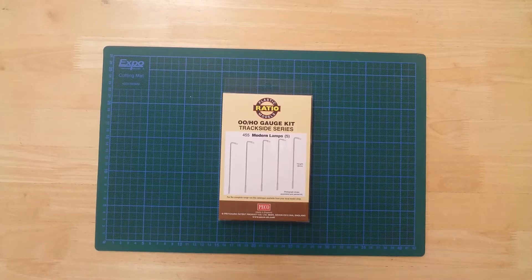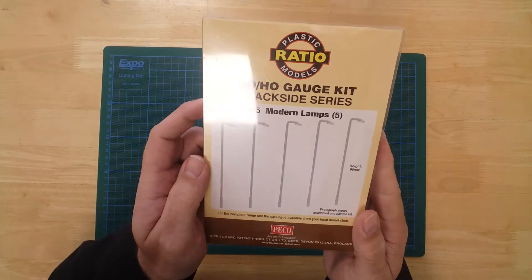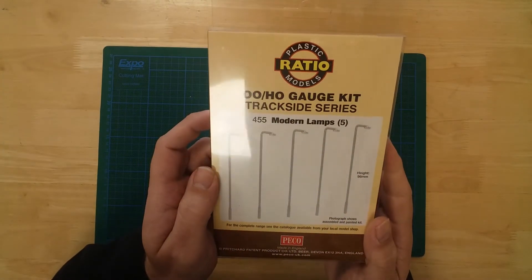This is a set of modern street lamps from Ratio in 00 gauge. The set includes five plastic street lamps that require only minimum assembly.